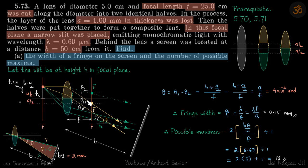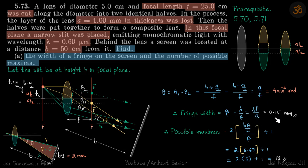For the triangle giving theta1: tan(theta1) = (h + a/2) / f, so theta1 = (h + a/2) / f for small angles. Similarly, theta2 = (h − a/2) / f. Therefore theta = theta1 − theta2 = a/f. The fringe width is lambda / theta = lambda·f / a, which comes to 0.15 mm.